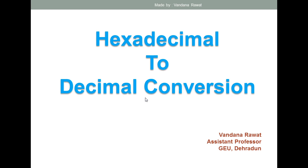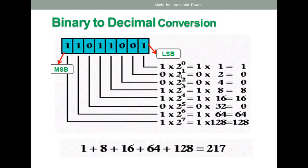If you want to convert any hexadecimal number into decimal, you can follow the same rules we used for binary-to-decimal conversion. Whether the source is a binary number, a hexadecimal number, or an octal number, to convert it into decimal you have to multiply it with the base of that number system.